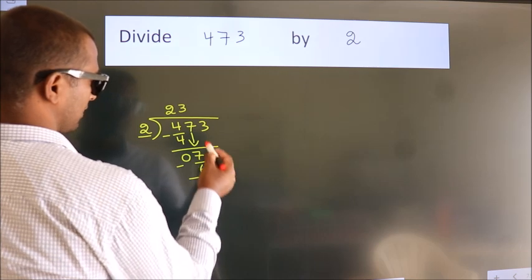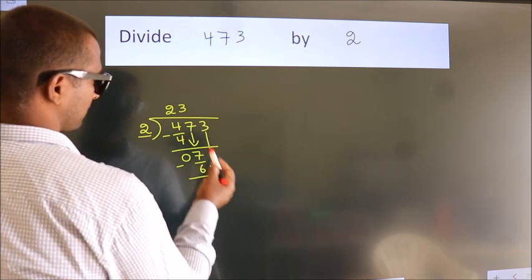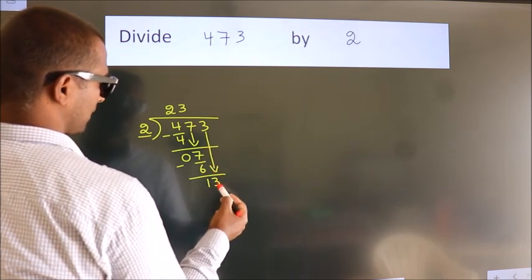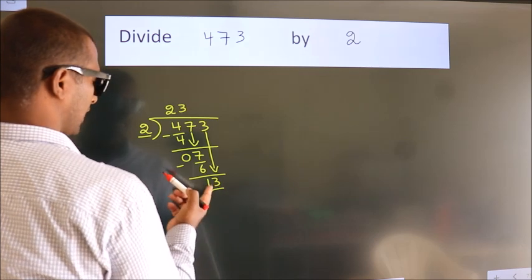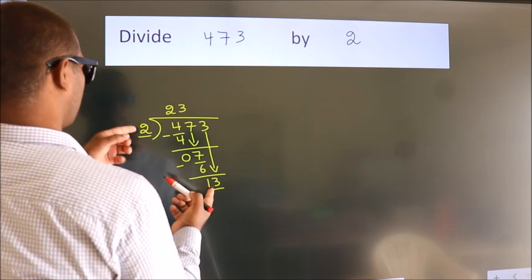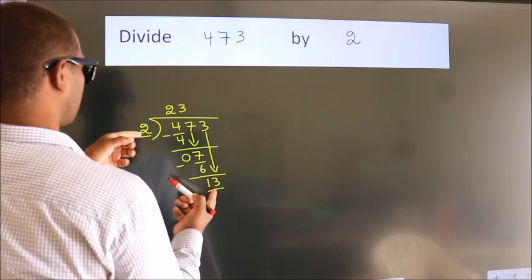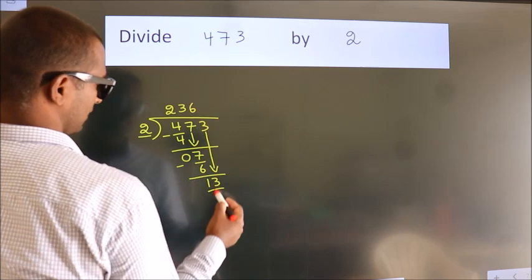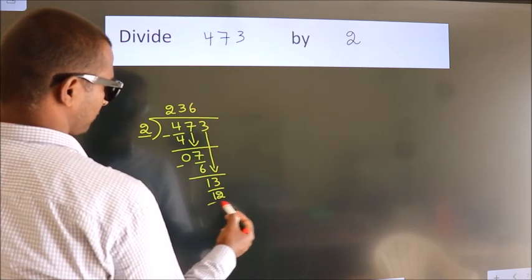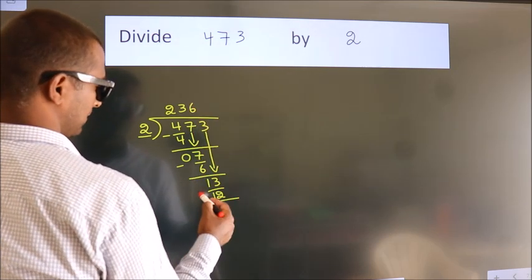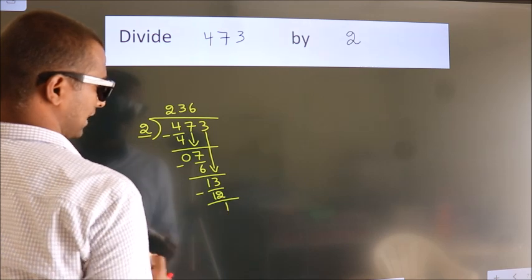After this, bring down the next number. So 3 down, giving us 13. A number close to 13 in the 2 table is 2 times 6, which is 12. Now we subtract. We get 1.